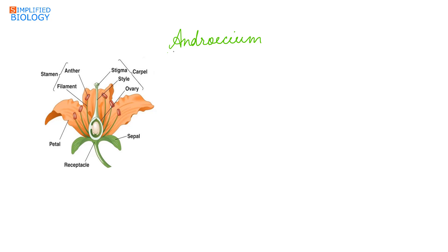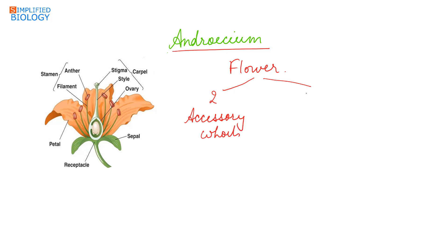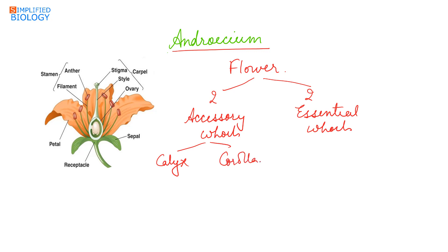Androecium is the male reproductive part. The reproductive part of the plant is the flower. A flower consists of two accessory whorls and two essential whorls. The two accessory whorls are calyx and corolla — calyx is made up of sepals while corolla is made up of petals. The two essential whorls are androecium, the male reproductive part, and gynoecium, the female reproductive part.